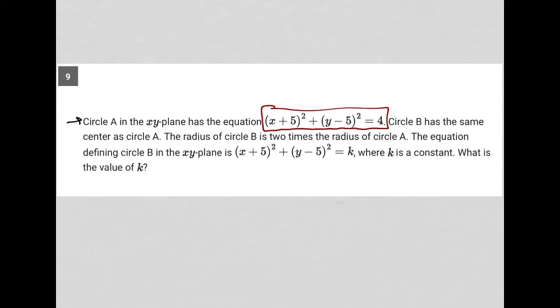Let's remind ourselves that the circle equation is x minus h squared plus y minus k squared equals r squared, where h comma k represents the center of the circle, and r represents the radius of the circle.